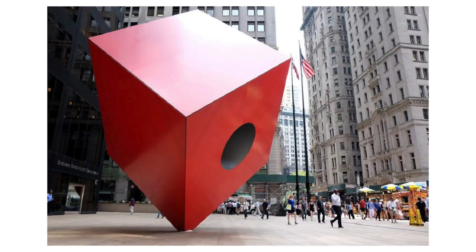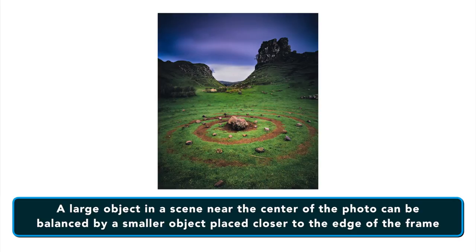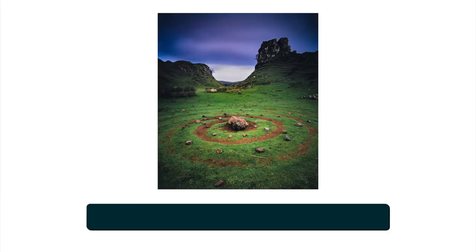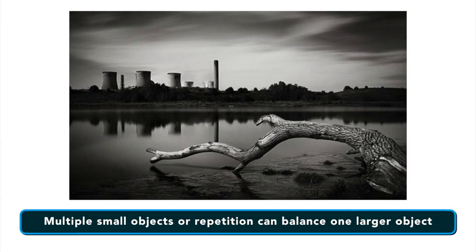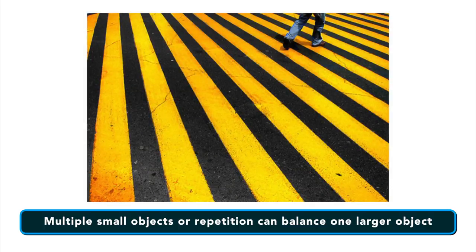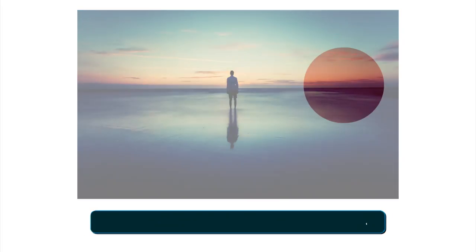Elements placed far from the center will feel heavier. A large object near the center of the photo can be balanced by a smaller object placed closer to the edge of the frame. Next, consider the quantity of items within the frame — multiple small objects can balance one larger object. Repetition of objects can be used here as well; the two small chairs are balancing out the large area of the ocean and sky. An isolated element also has more visual weight. Imagine a blank white canvas with one red dot — your eye would go directly to the red dot first because there's nothing else in the frame.